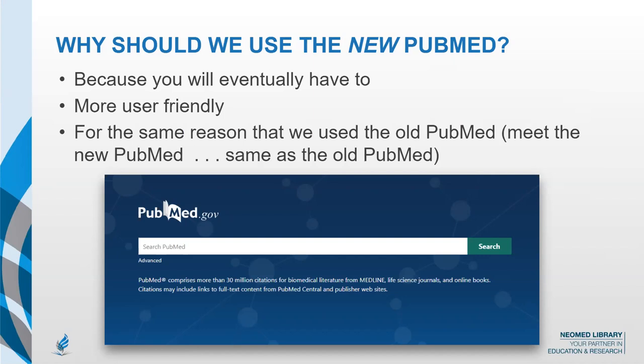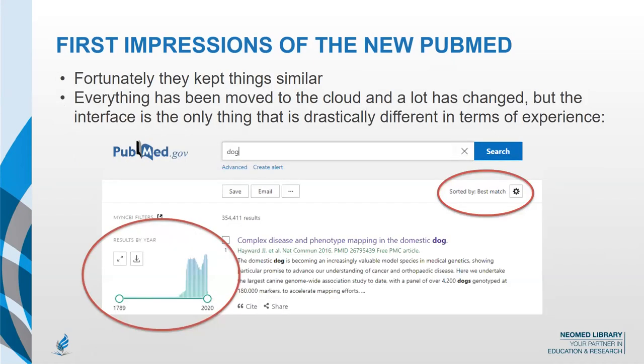The more important changes are with the aesthetic looks, the usability, and the interface. This is an example of the new PubMed interface — they've kept things similar. Everything is moved to the cloud, and the user interface is switched. If you're familiar with the old interface, they've switched a few things around which might take a little time to get used to. Having the chart with the dates is something I noticed right off the bat. There is still a sort feature — it's just been moved to another location.